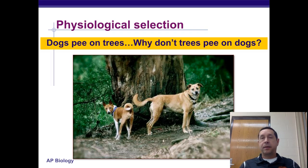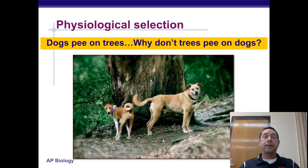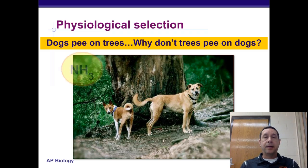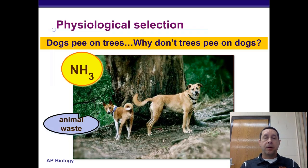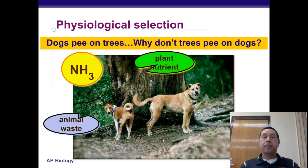Dogs pee on trees — why don't trees pee on dogs? Dog urine has ammonia in it. Ammonia is an animal waste product, but it's actually a plant nutrient.